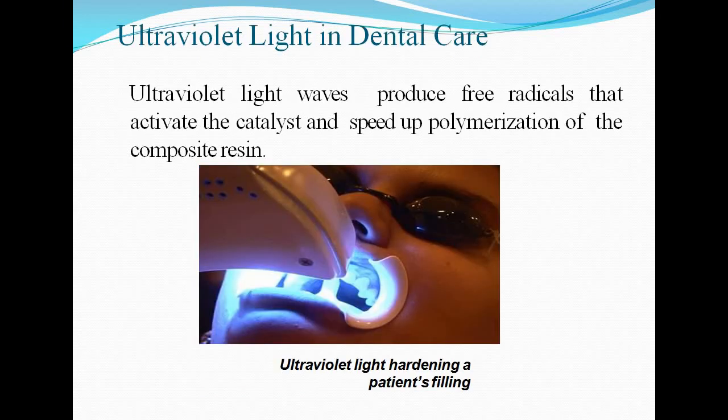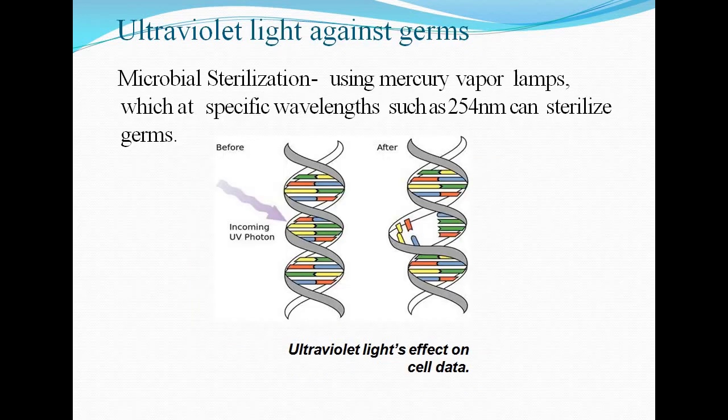Ultraviolet light in dental care. Ultraviolet light waves produce free radicals that activate the catalyst and speed up polymerization of the composite resin. Ultraviolet light against germs: microbial sterilization using mercury vapor lamps which at specific wavelengths such as 254 nm can sterilize germs.